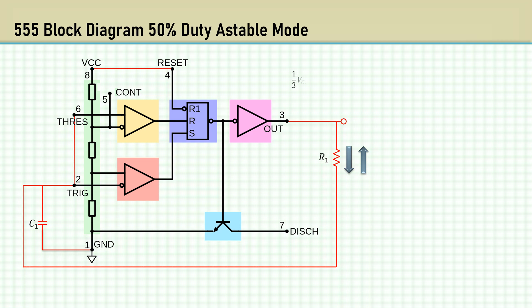The capacitor charges between one-third VCC and two-thirds VCC. This gives us a square wave output where the time the signal is high equals the time the signal is low.